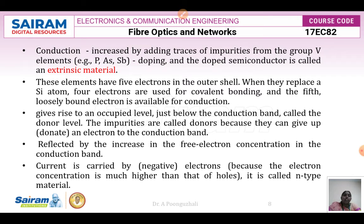To increase the conduction properties of the semiconductor, we add traces of impurities. These impurities can be either from a group 5 element or a group 3 element. If the impurities are from group 5 elements — for example Phosphorus, Arsenic, or Antimony — this addition of impurities is called doping, and the doped semiconductor is called an extrinsic material. When group 5 elements are added, there are 5 valence electrons in the outer shell.